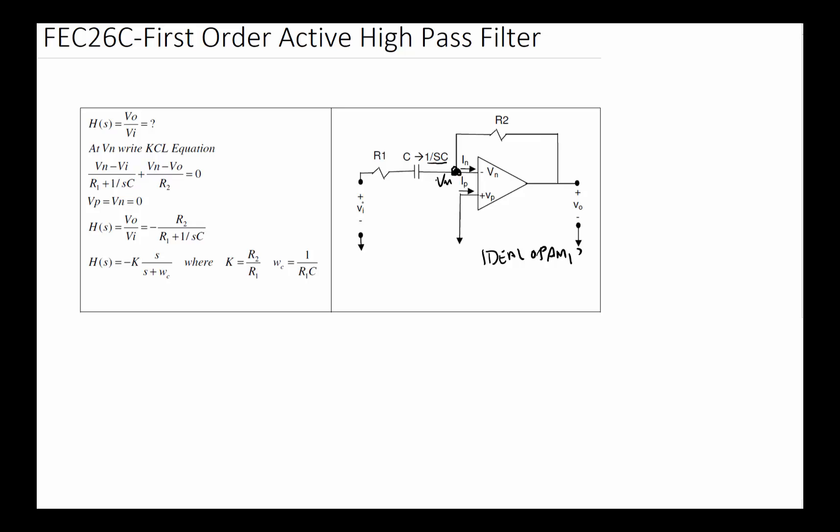We will find that the current flows through here which is VN minus VI divided by R1, plus 1 over SC (this term), and then there's a current that goes this way which is VN minus Vout, and then IN which goes in. But we know in an ideal op-amp one of the conditions is that IN equals IP equals zero, so we don't need to write it.